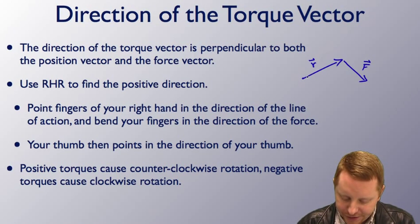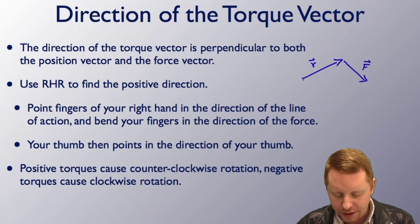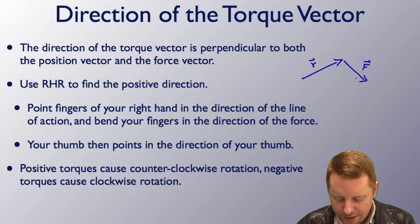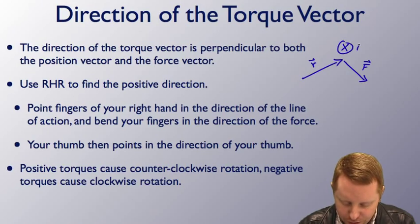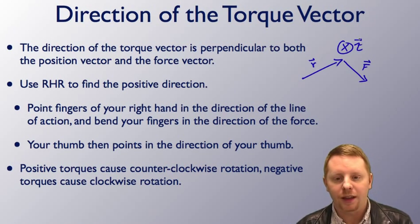In this case, if we have R cross F, point the fingers of your right hand in the direction of R, bend them in the direction of F, and you should see that your thumb points into the screen. So that would be the direction of the torque vector.